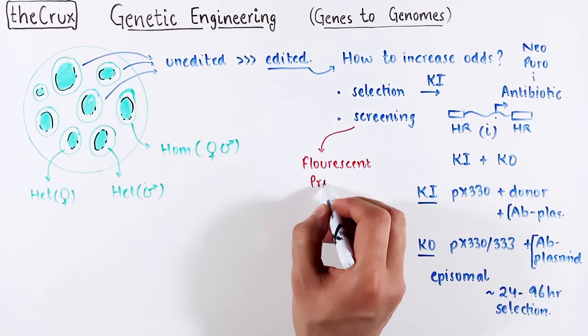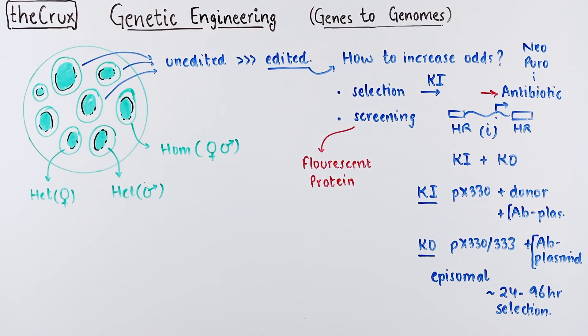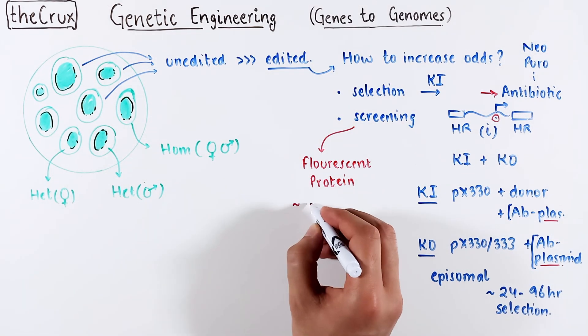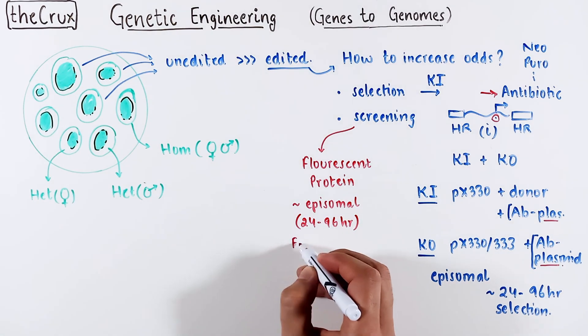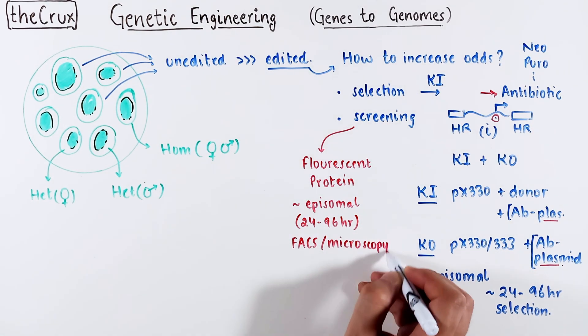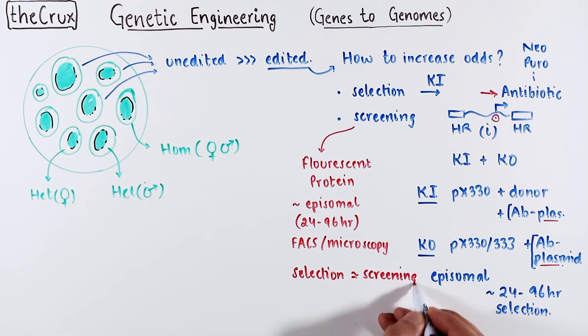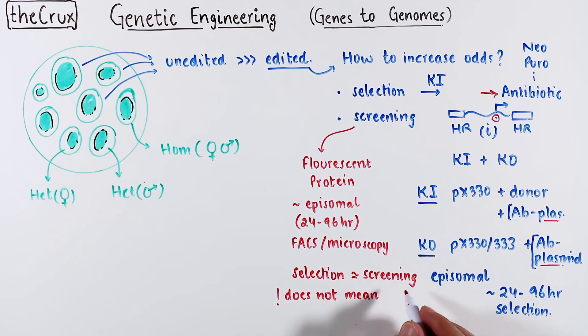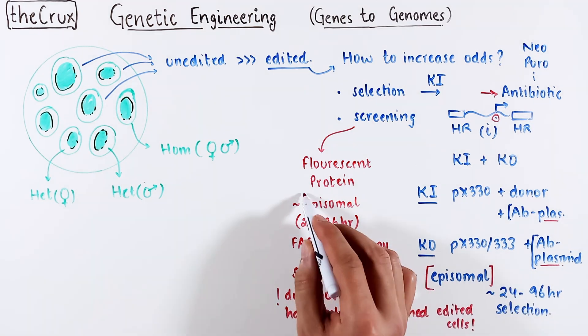For screening, you can use a color marker instead or in addition to the selection marker like a fluorescent protein. And you can do this epizomally as well, but it would require fax or microscopy based selection to isolate the target population. In case of epizomal delivery, both selection and screening is equivalent. Because you're not screening or selecting the edited population, you're only selecting or screening cells that have successfully received the cargo. Epizomal delivery could be used if cargo delivery efficiency is poor.